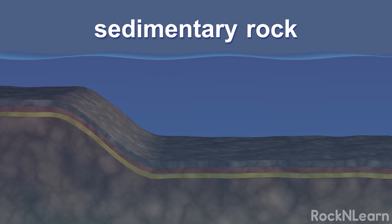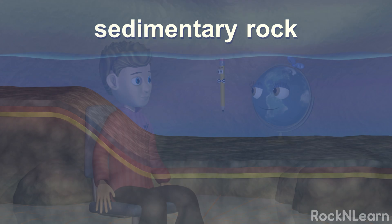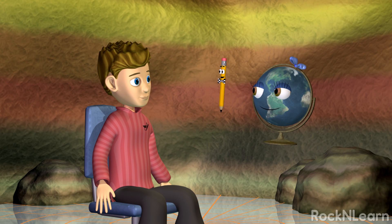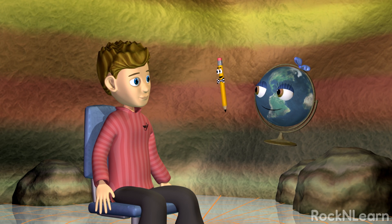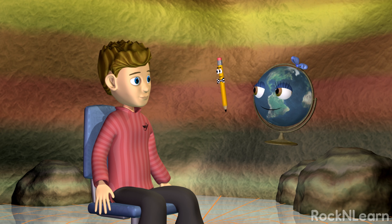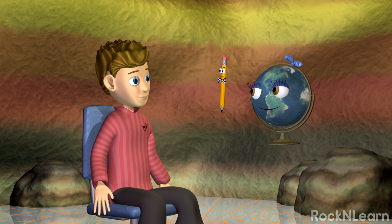That's right! Sedimentary rocks make up about three quarters of the rocks at the Earth's surface. Sometimes they can give us clues about what the environment was like when those rocks were formed.